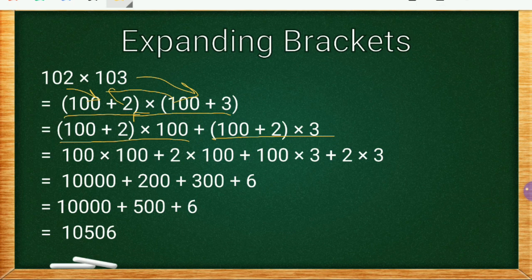Now remove the brackets: 100 × 100, then 100 × 2, then 100 × 3, and 2 × 3. Now you'll find this is simple, much easier to multiply.